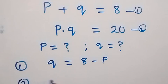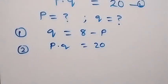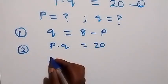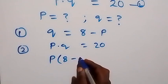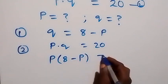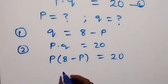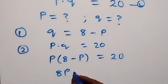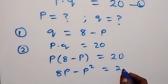From equation 2, we have p times q equals 20. This can now be written as p times (8 minus p) equals 20. Opening the bracket gives us 8p minus p squared equals 20.